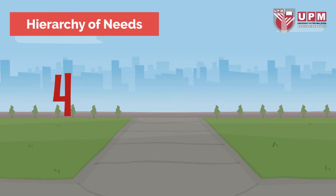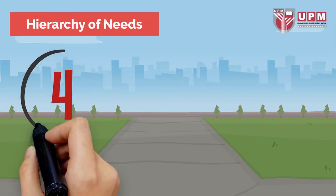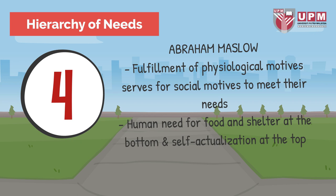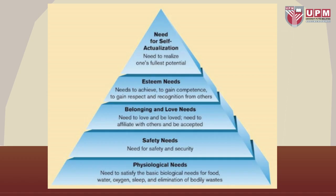Next is hierarchy of needs. The fulfillment of physiological motives serves as a foundation for social motives to meet their needs. Human need for food and shelter is at the bottom and self-actualization is at the top. This is Maslow's list of basic needs that have to be satisfied before people can become self-actualized. Low-level needs must be met before trying to satisfy higher-level needs. Self-actualization is to fulfill one's potential.